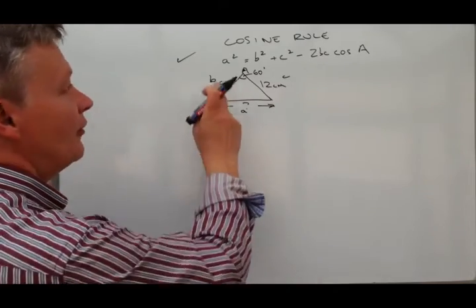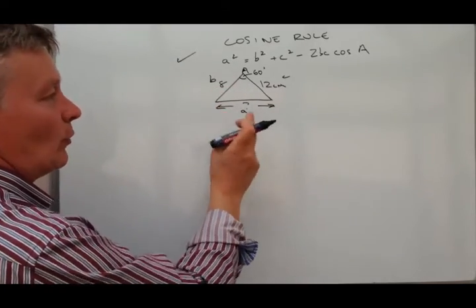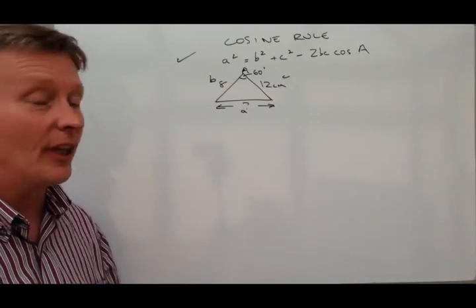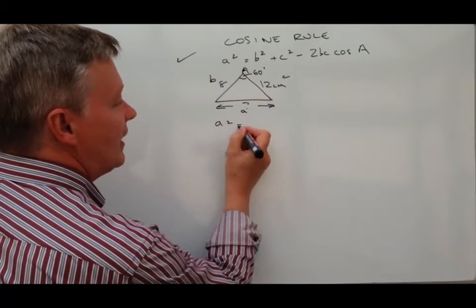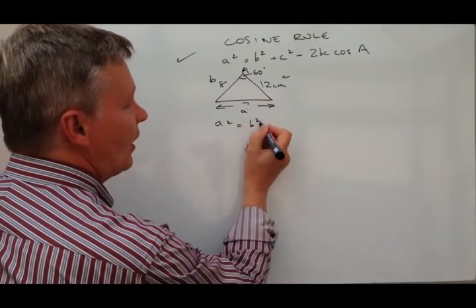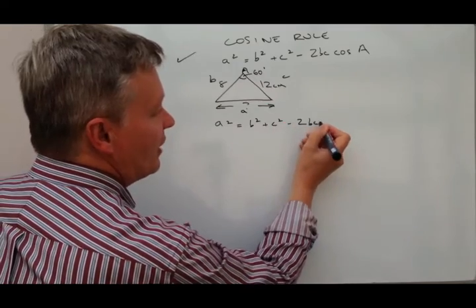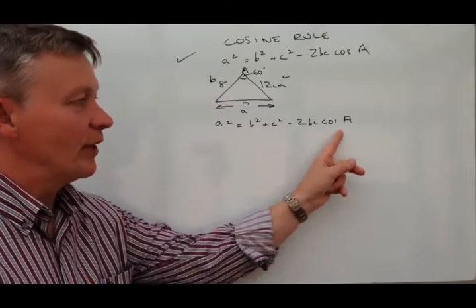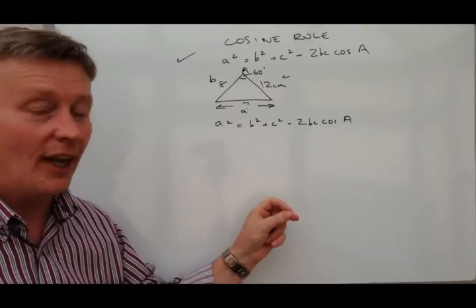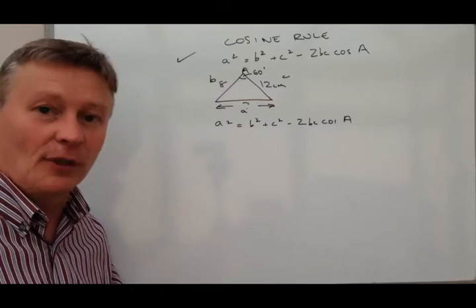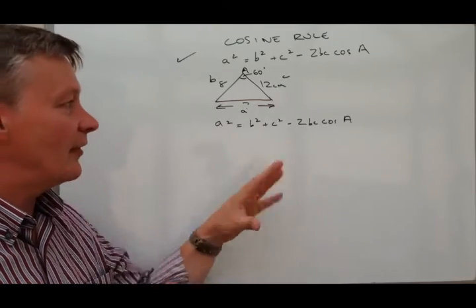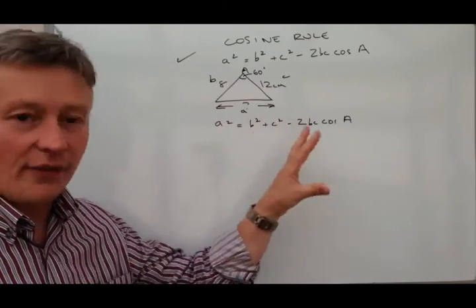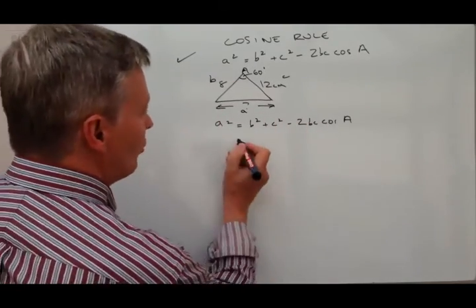So if we wanted to work out the value of A, what we would do is just basically feed that information into the formula. So we would have A squared equals B squared plus C squared minus 2BC cosine A. What I'm going to do now is put the information I've got into place on that formula, and then if you want to go ahead and calculate that, that's perfectly fine.